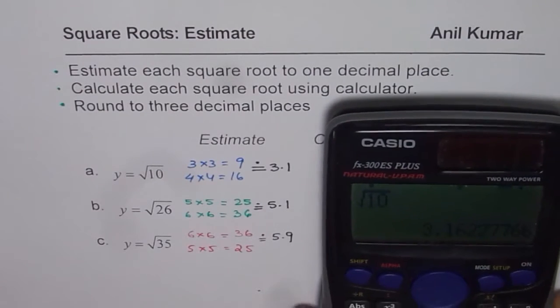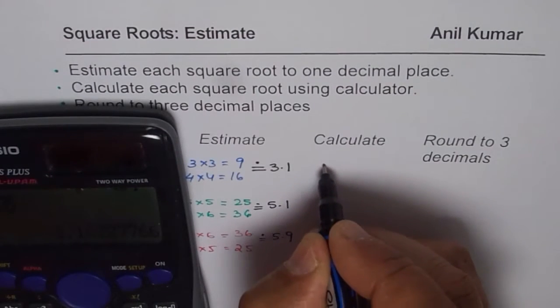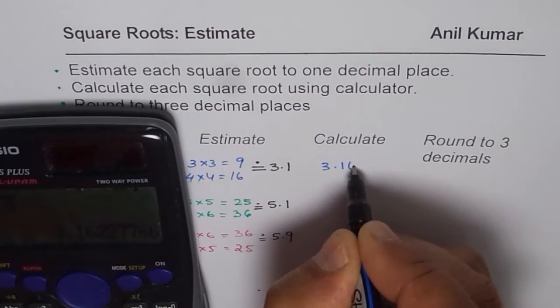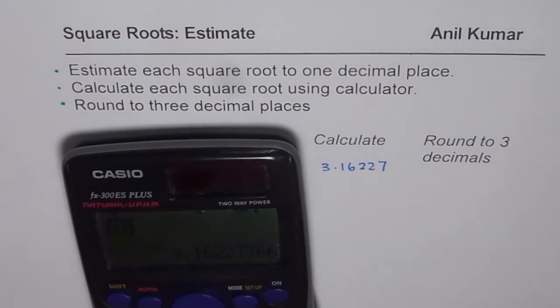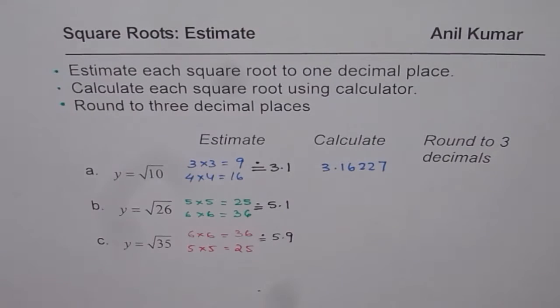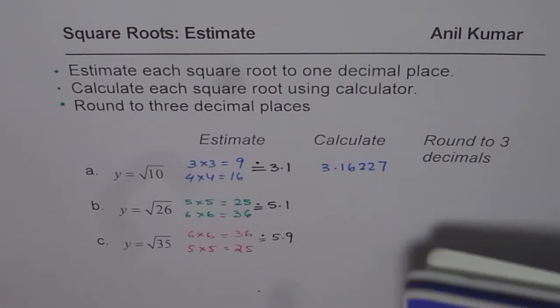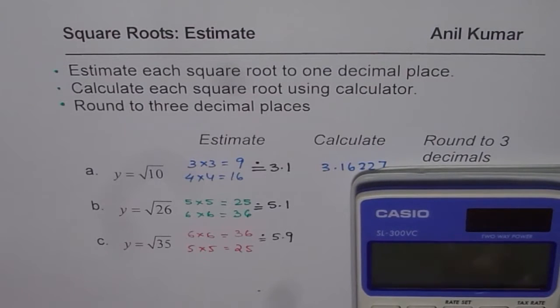So I will write 3.16227. This is a scientific calculator, slightly more complicated. Let me use a simpler calculator to calculate square root for the next question.